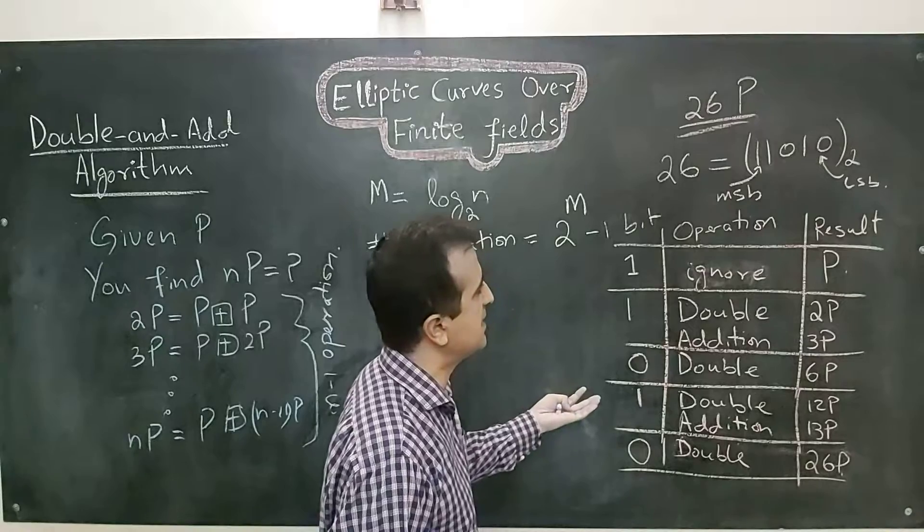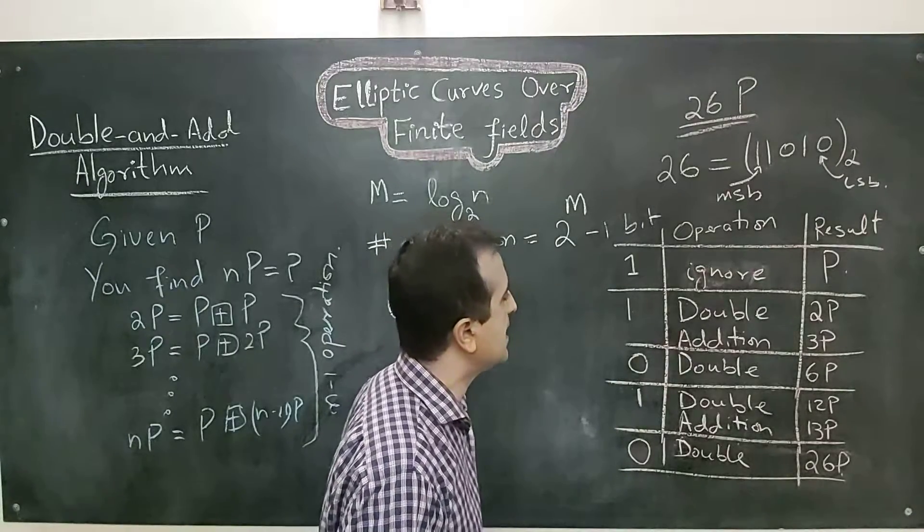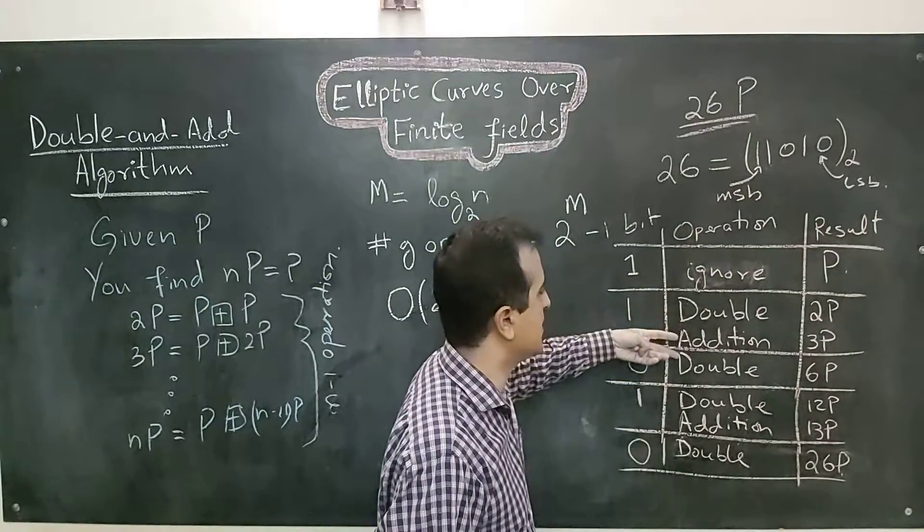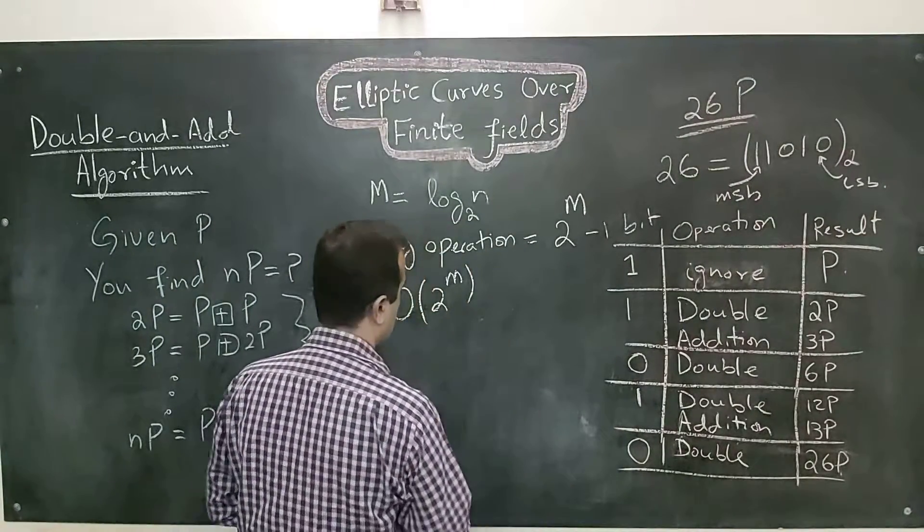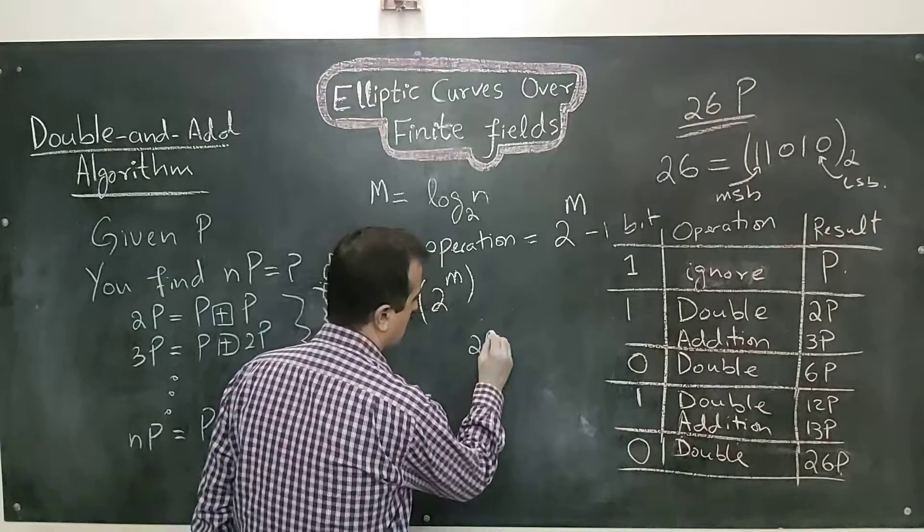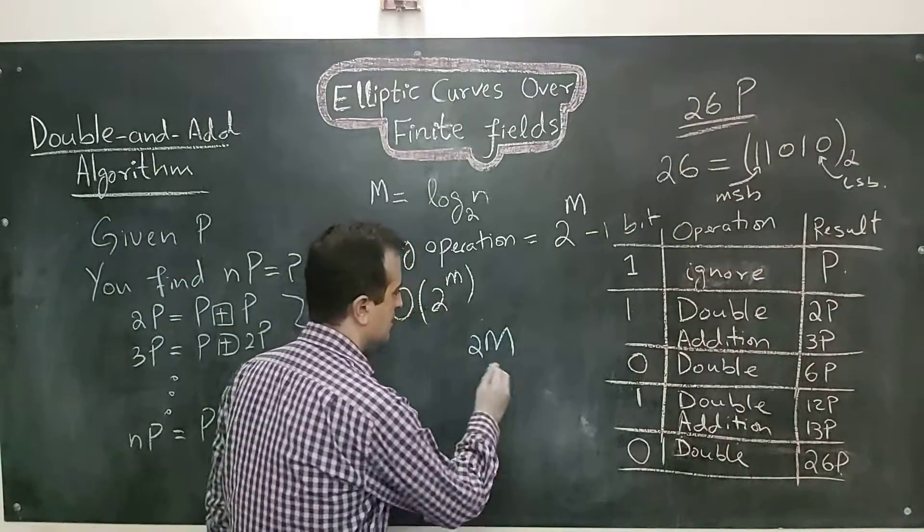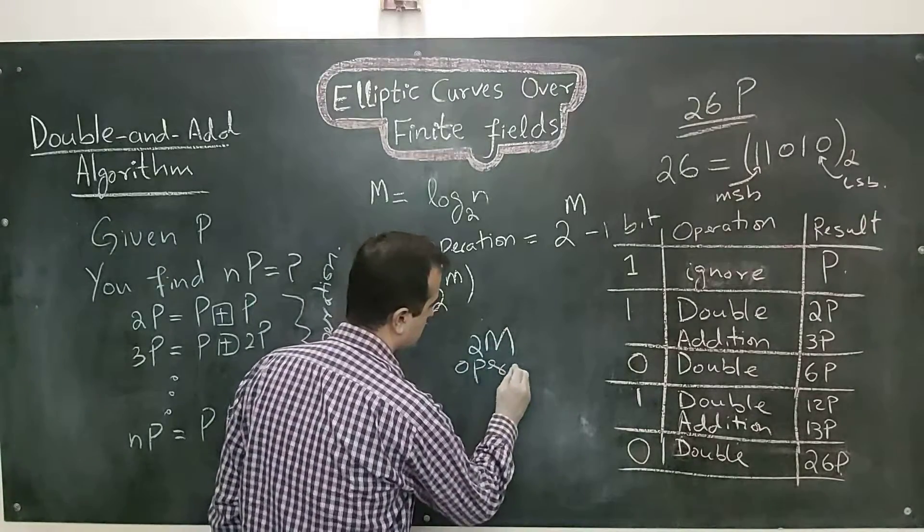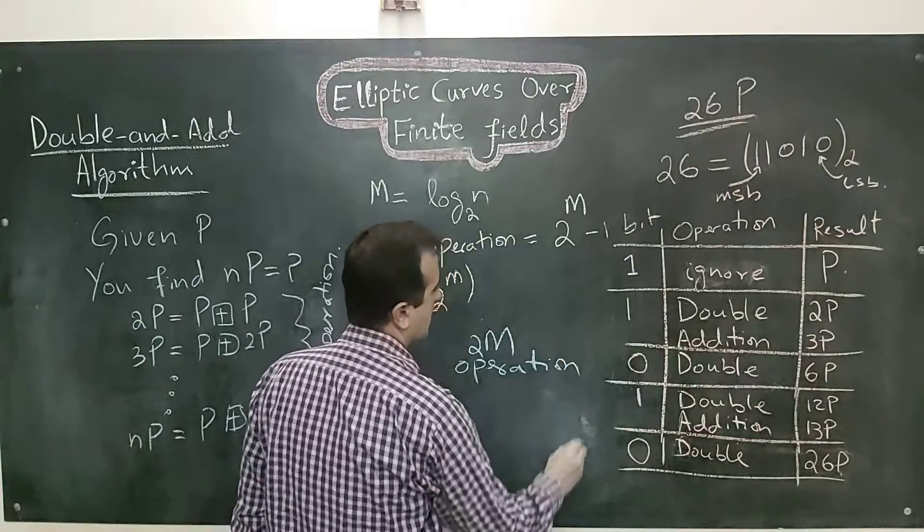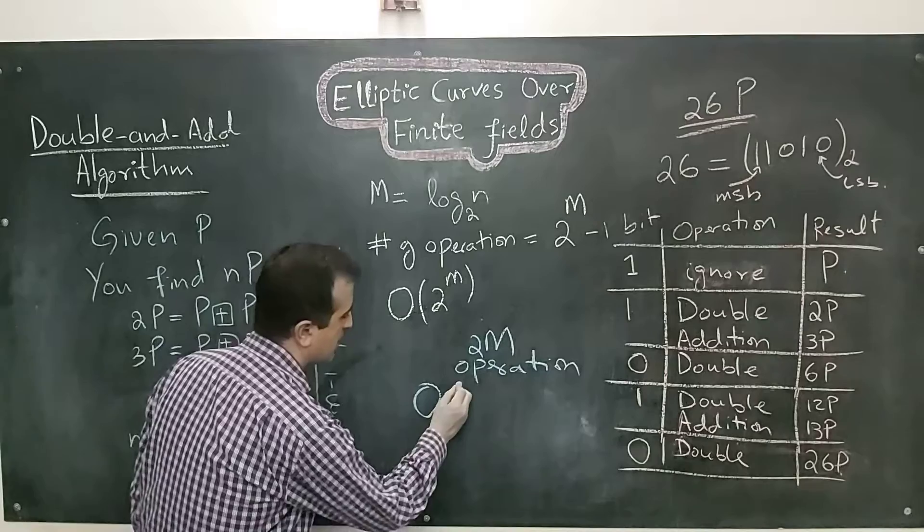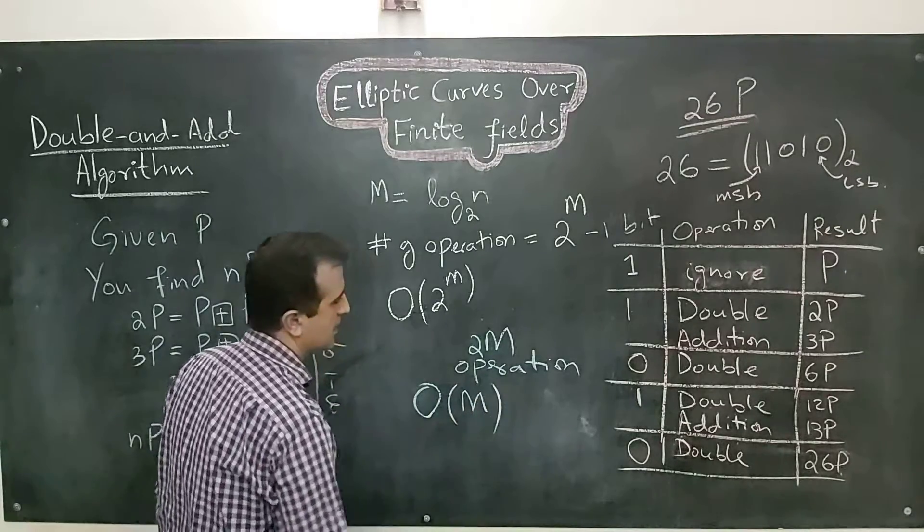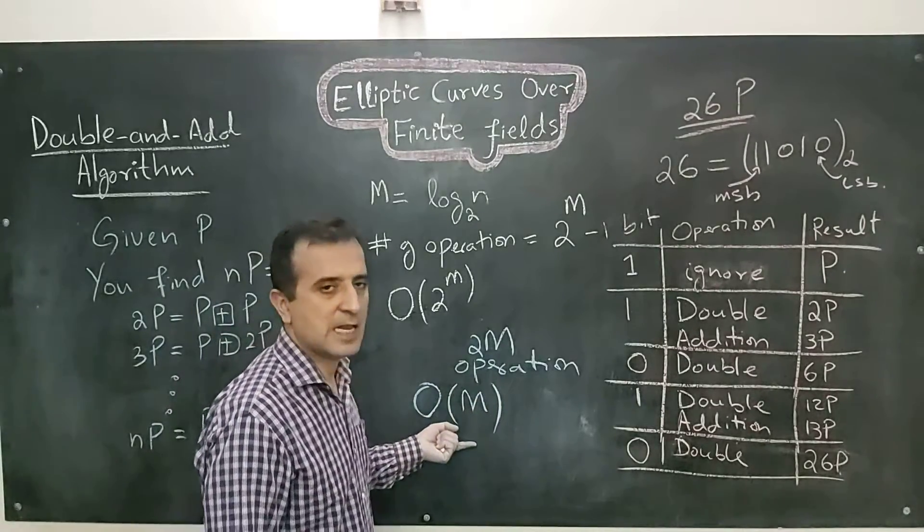So we have basically 5 steps. In each step, we can have at most 2 operations. So in the worst case, we can say we have 2M operations. And in terms of big O, the time complexity is big O(M), and this is linear time complexity.